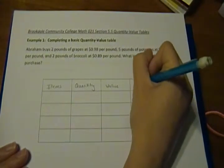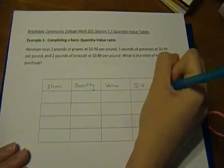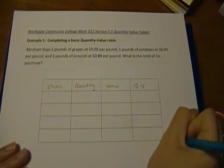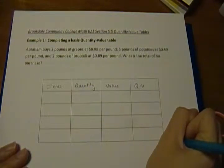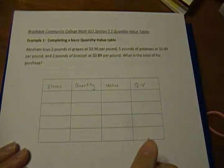And the last is going to be our Q times V. So it's going to be the total worth for each row, and then eventually the last box in that column will have our overall total quantity value. So that's going to give us our receipt total for this purchase.